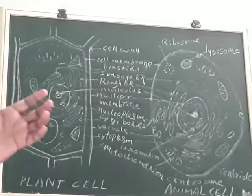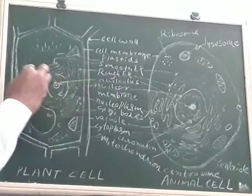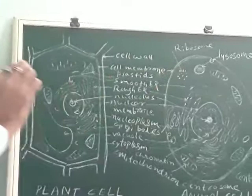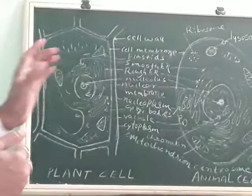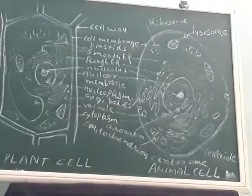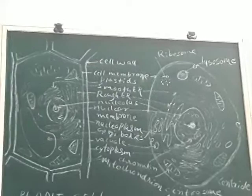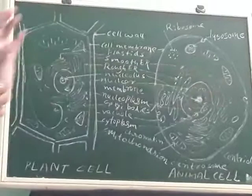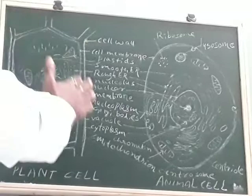Inside the nucleus there are thread-like structures called the chromatin network. The chromatin network coils and forms chromosomes. Chromosomes contain structures called genes. Genes are the carriers of characters — they transfer characters from one parent to offspring. This applies to both plant and animal cells, allowing characters to pass from one generation to the next.